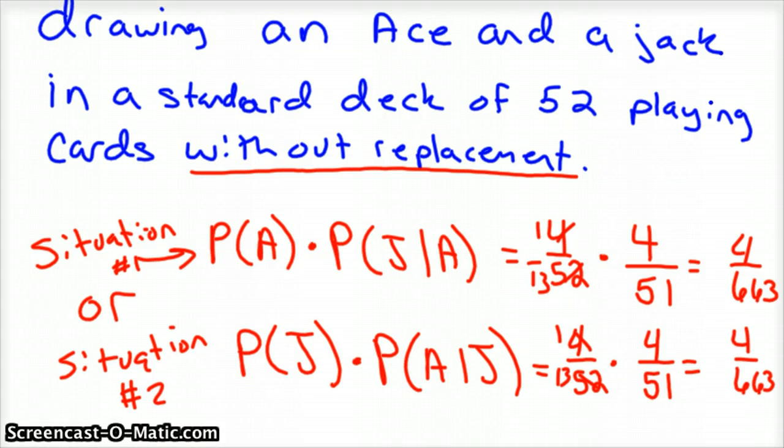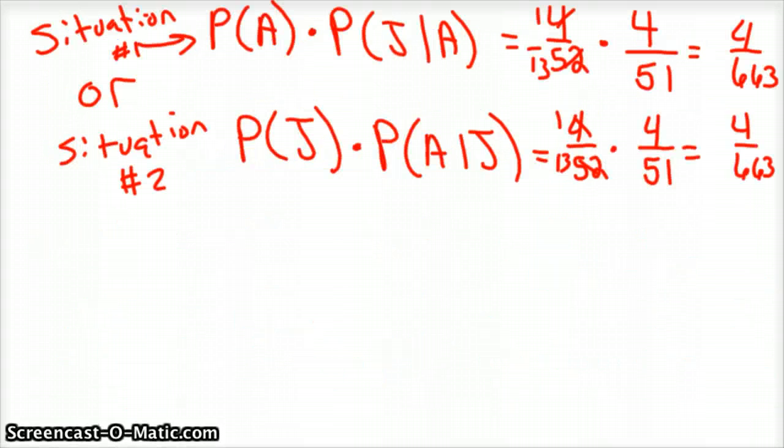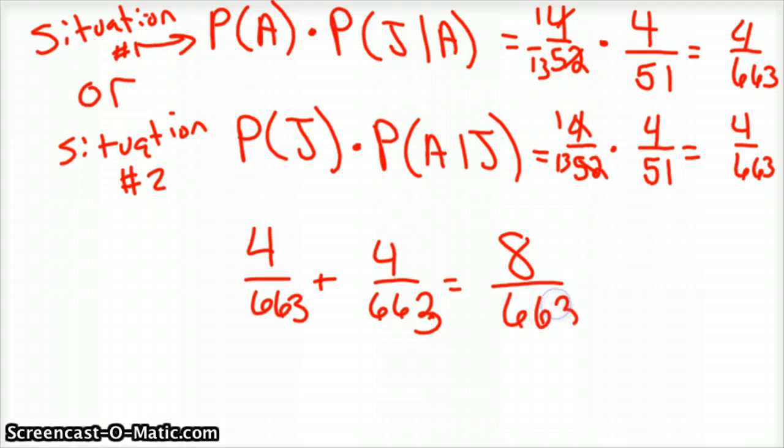But since I said the word or, we're going to have to add these. And these are mutually exclusive events. Jacks and aces don't have any overlap. And so you'd have 4 out of 663 plus another 4 out of 663 for situation 2. And so our probability of getting an ace and a jack is 8 out of 663.